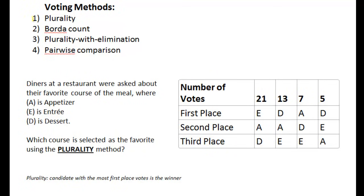Alright, this video is a real quick demonstration of how the plurality method for voting works. We're told that diners at a restaurant were asked about their favorite course of the meal, where A is appetizer, E is entree, and D is dessert. So using the plurality method, which course is the favorite?